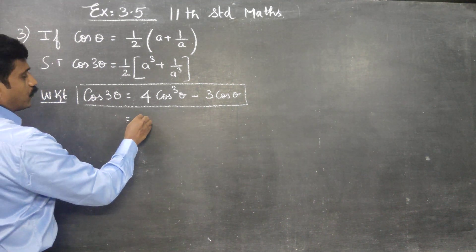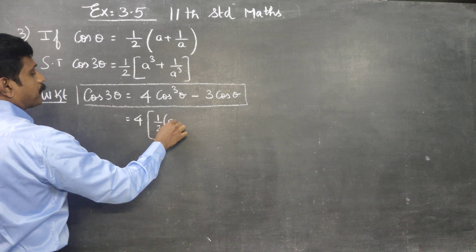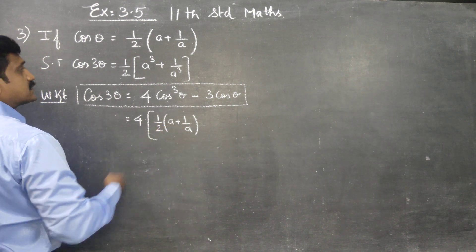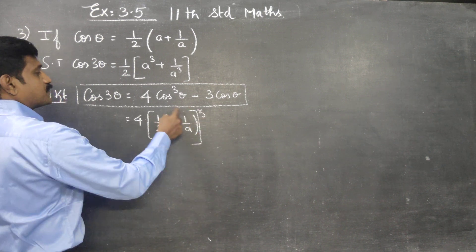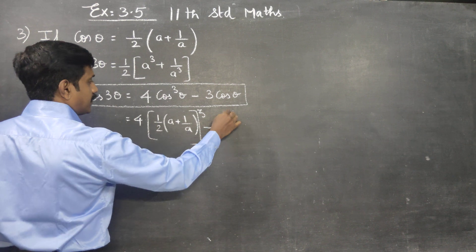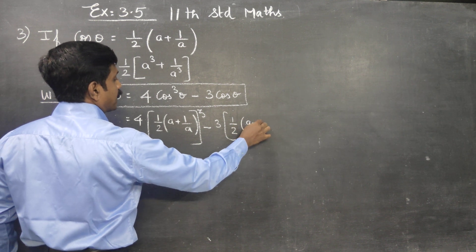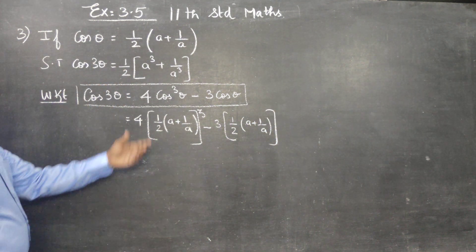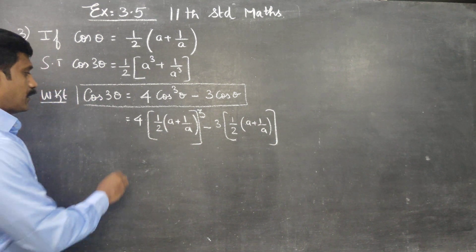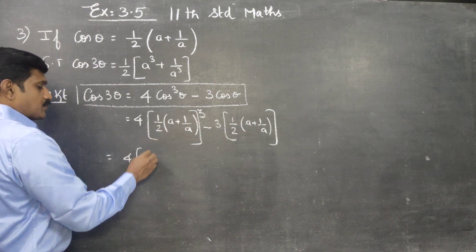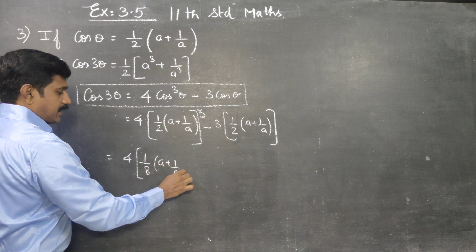Now substituting cos θ = (1/2)(a + 1/a). So cos 3θ = 4 times [(1/2)(a + 1/a)]³ minus 3 times (1/2)(a + 1/a). The cube of (1/2) gives us 1/8, so we have (4/8)(a + 1/a)³, which is (1/2)(a + 1/a)³.